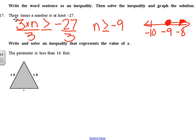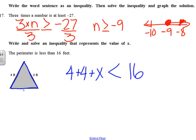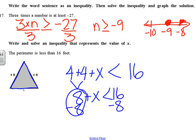Number eighteen: write and solve an inequality. The perimeter is less than 16 feet. The perimeter of this triangle: 4 plus 4 plus x is less than 16 feet. 4 plus 4 is 8, so 8 plus x is less than 16. Subtract 8 from each side: x is less than 8. Since we're talking about feet, we need units — so x could be anything smaller than 8 feet: 4 feet, 5 feet, 6 feet, 7.8 feet, but not exactly 8 feet.